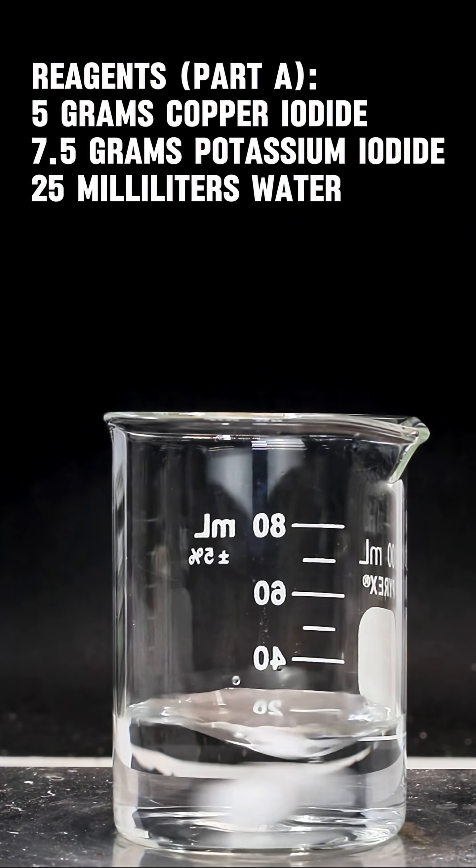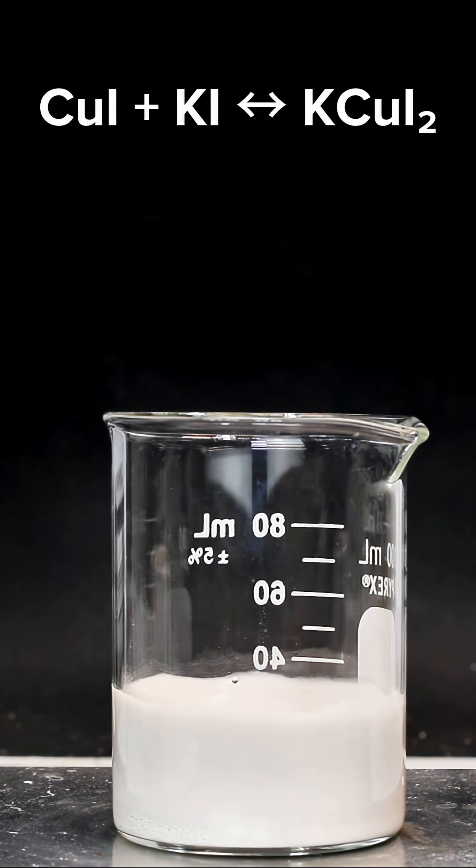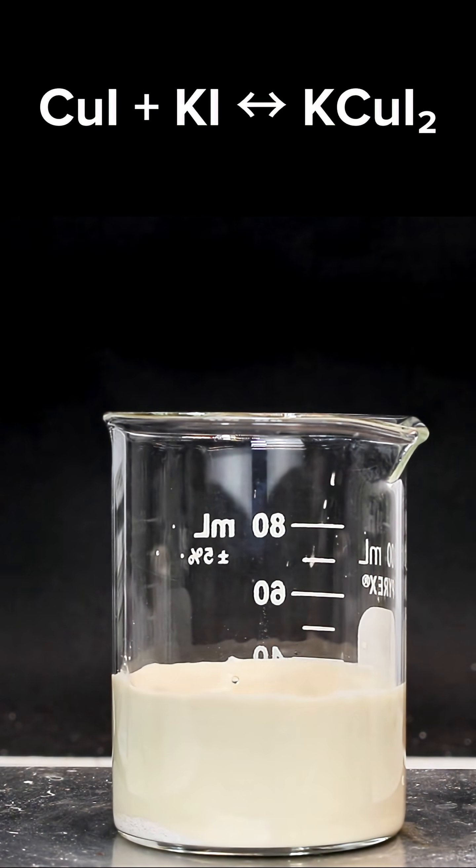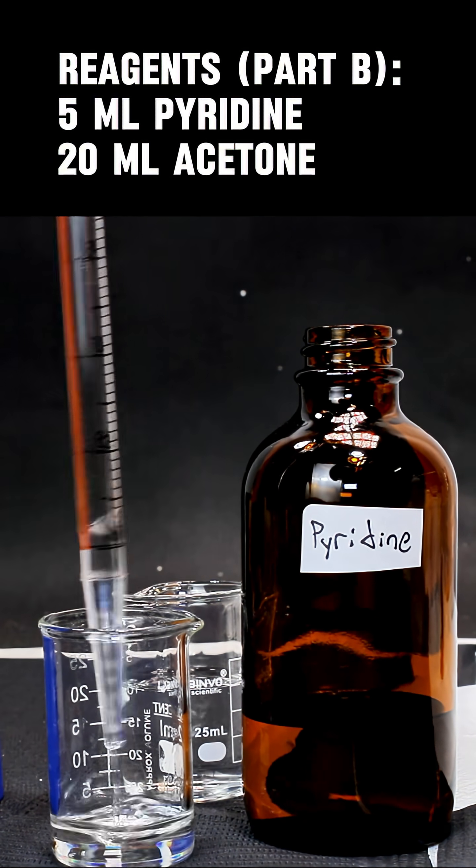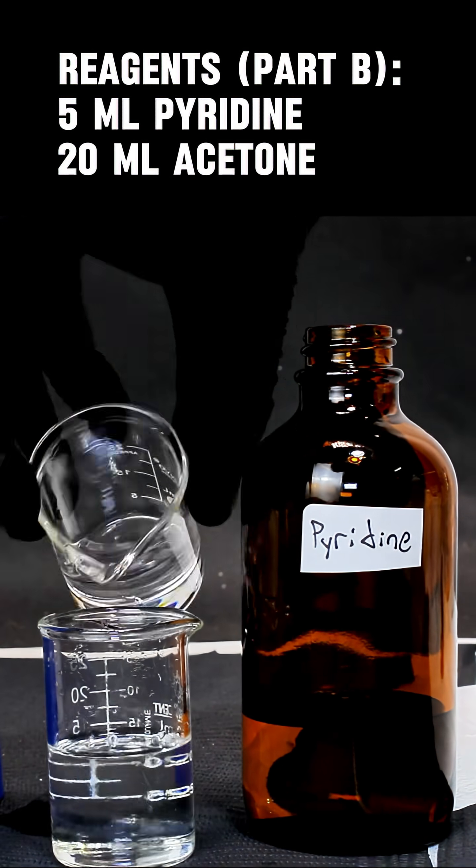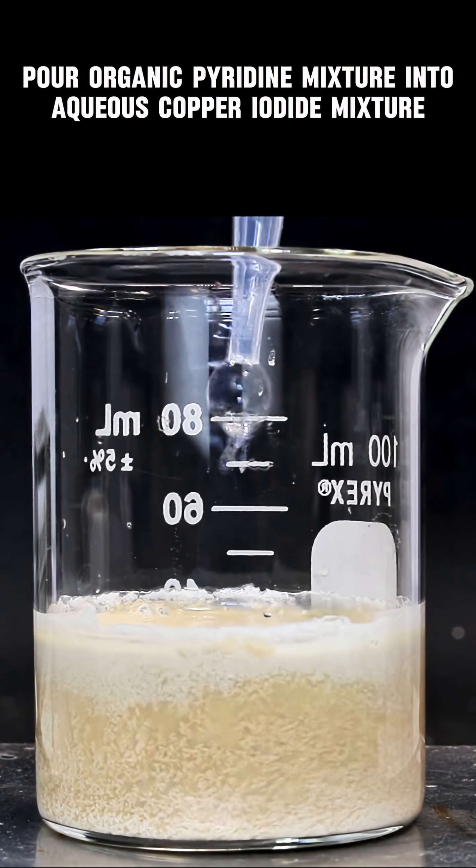This is part A of our mixture. For part B, combine one part pyridine with four parts acetone. Now for the final step, pour the organic pyridine mixture into the copper iodide mixture and the product will immediately begin to form.